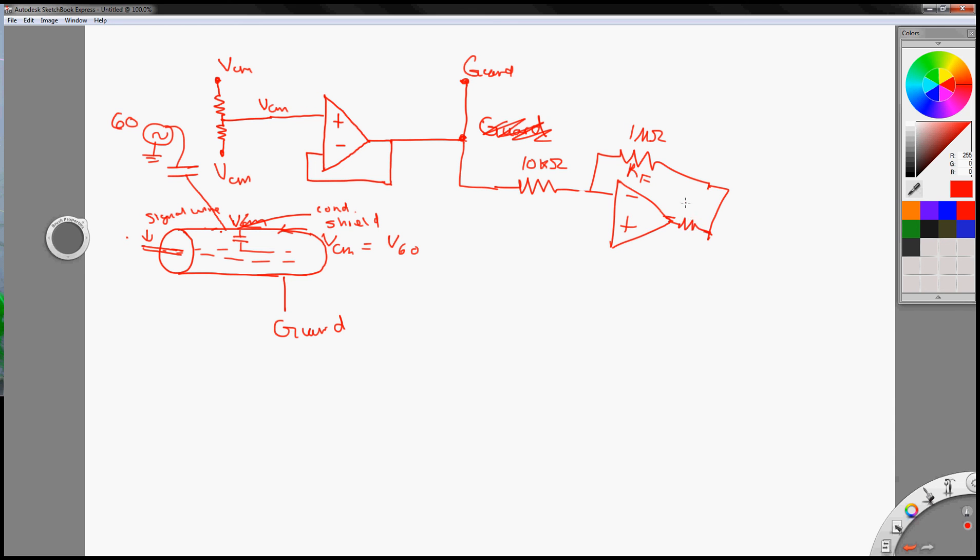Here, so I'll put 1 megaohm here, and we can model the right leg resistance at 100K, that's the worst case scenario. And then this is ground, I'll put here.